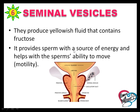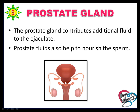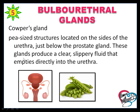The seminal vesicle produces a fluid that contains fructose, which provides the energy source for the sperm and helps with sperm motility. The prostate is a walnut-shaped structure located behind the urinary bladder. It surrounds the ejaculatory duct at the base of the urethra and produces prostatic fluid, which helps to nourish the sperm.